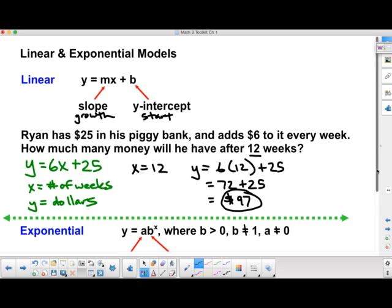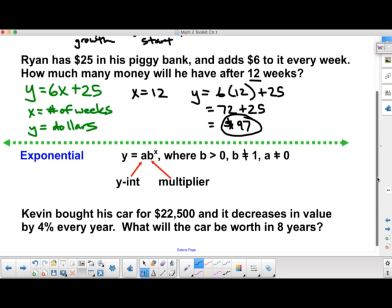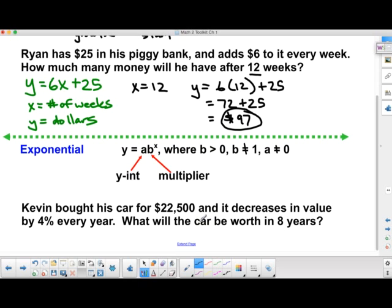So what if it doesn't grow by the same amount every time, but instead grows by the same percentage? That's what we call an exponential model. So we have y equals a times b to the power of x. A is our y-intercept, and b is our multiplier.